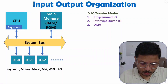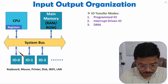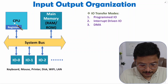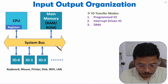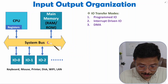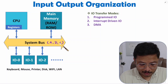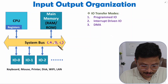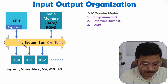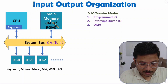Here you can observe the basic architecture of IO interface with CPU. This CPU is interfaced with IO devices via the system bus. You should know that the system bus is a combination of address bus, data bus, and control bus. The combination of address, data, and control makes the system bus.